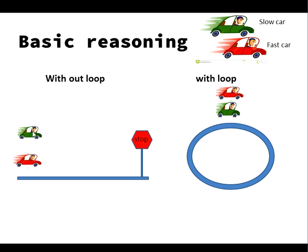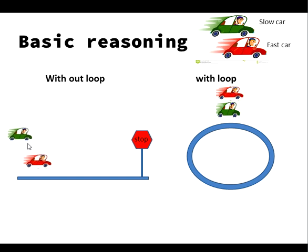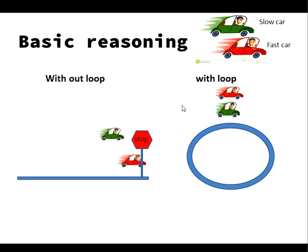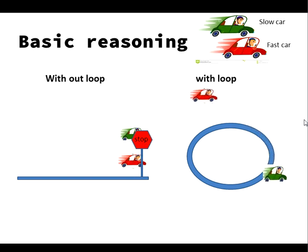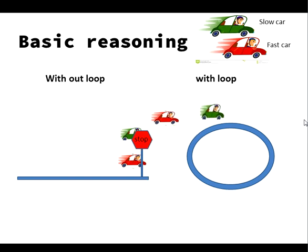Imagine two scenarios. To your left we have a straight road with an endpoint, and two cars start at the same time but the red car is faster than the green car. As the road is straight, the faster car never sees the slower car before the endpoint. To your right we have a road that is in a loop like a race track. In this case, the faster car encounters the slower car multiple times. So from the faster car's perspective, if you see the slower car before reaching an endpoint, that means there is no end and the faster car is running in a loop.